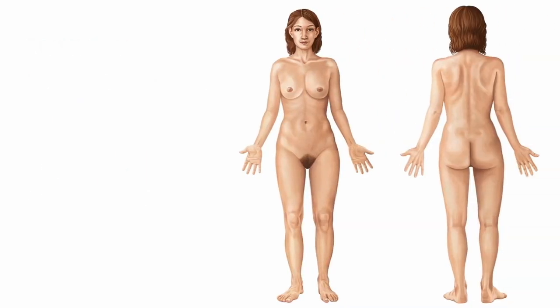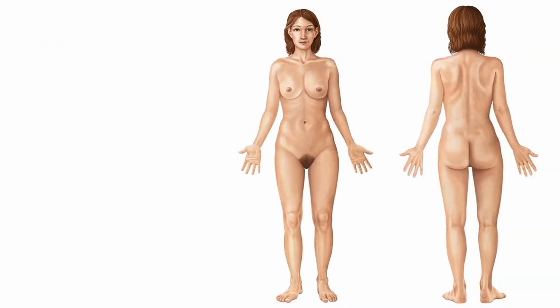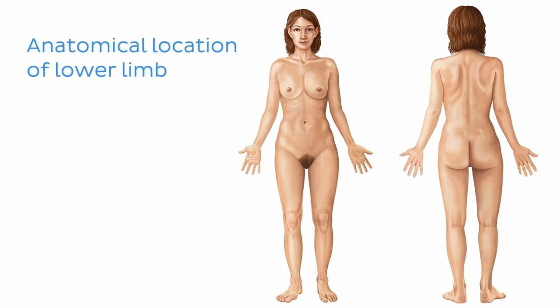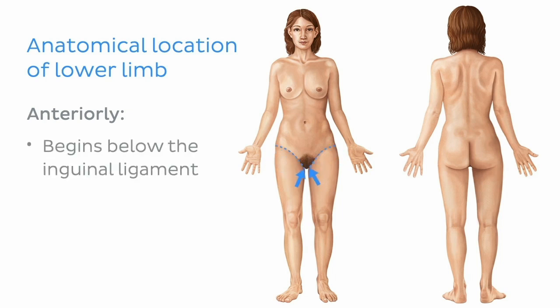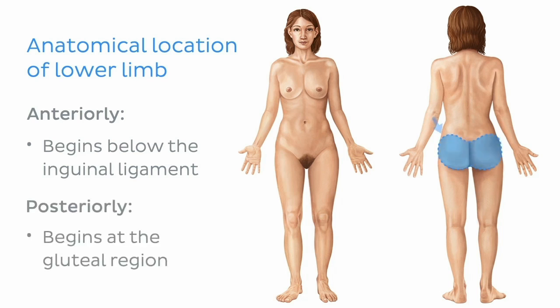Before we dive in, let's just take a second to outline the exact anatomical location of the lower limb. Anteriorly, the lower limb begins just below the inguinal ligament. Posteriorly, the lower limb begins at the proximal aspect of the gluteal region. Needless to say, the lower limb terminates at the toes.